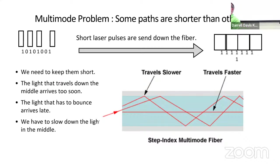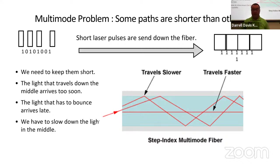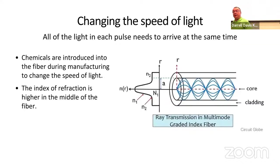So we've got this round glass thing and we want to put a signal down it. We have a problem: some light goes straight down the middle, some bounces a little, some bounces a lot. We're trying to put in discrete symbols — ones and zeros — and if it all blurs together, they all look like ones. So we had to slow down the light in the middle. We used chemicals to change the index of refraction, so light going straight down the middle is slowed, while light that's bouncing gets to travel faster, and in the end it all arrives at the receiver at the same time.